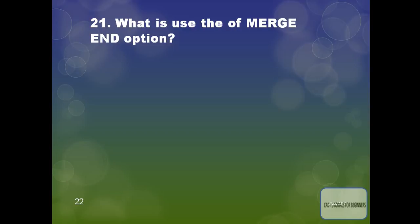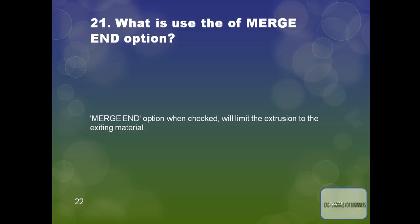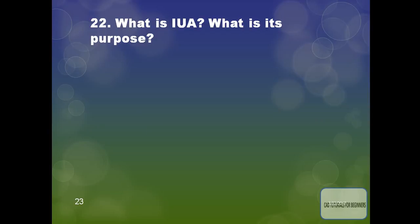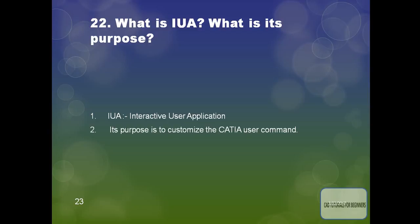What is the use of Merge End option? The Merge End option, when checked, will limit the extrusion to the existing material. What is IUA and its purpose? IUA is the Interactive User Application and its purpose is to customize user commands.